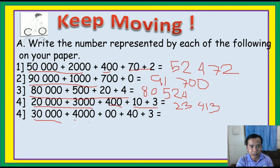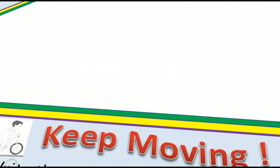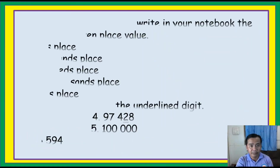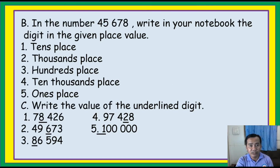In the number 45,678, write in your notebook the digit in the given place. What is the tens place? Ones, tens — seven. What is the thousands place? Ones, tens, hundreds, thousands — five. What is the hundreds place? Ones, tens, hundreds — six. What is the tens place? — four. And what is the ones place? Eight. You got it right.